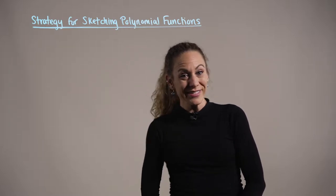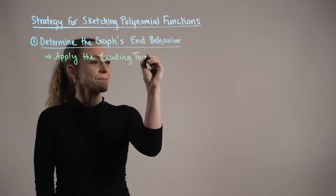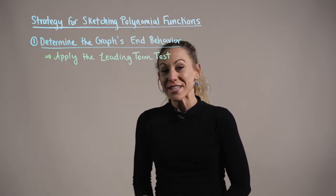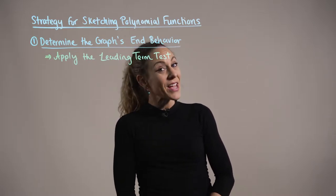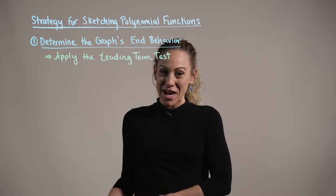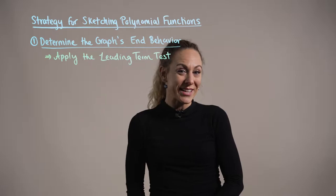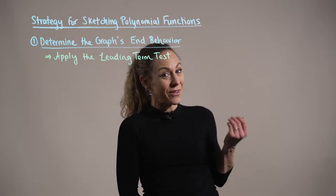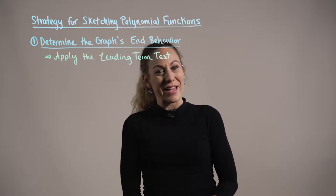So step one. The first step in sketching the graph of polynomial functions is to determine the end behavior of the graph. In order to determine such end behavior, we need to apply the leading term test to identify the degree of the polynomial as well as the leading coefficient, which will tell us how the graph's ends behave.